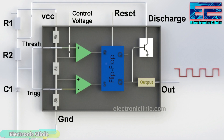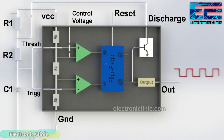The 555 timer IC in the astable mode acts as an oscillator, also known as the free-running multivibrator. In the astable mode, the output of the 555 timer continuously switches between the high and low states. This is a basic circuit diagram of the 555 timer in the astable mode. The non-inverting and inverting inputs of the two voltage comparators are connected together and then connected to the middle of R2 and C1. Two resistors R1 and R2 are connected in series with capacitor C1. A wire from the middle of R1 and R2 is connected with the discharge pin.